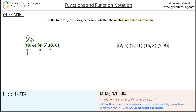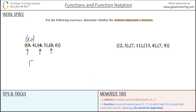If none of these x values are the same, then it's a function. If a value were to repeat — for example, if this five were a three — then it is not a function anymore. It's as simple as that when recognizing functions given a set of ordered pairs. So this example is indeed a function.